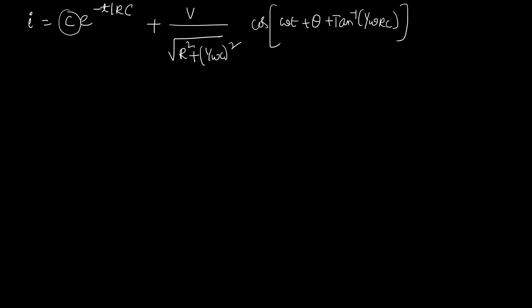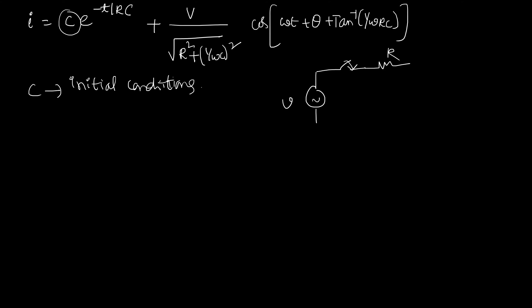C can be obtained using initial conditions. Imagine the circuit: supply voltage, switch closed, and the resistor. We assumed the initial charge of the capacitor is 0, meaning the voltage across it is 0. So at t = 0 the capacitor behaves like a short circuit. The current at t = 0 is I = V/R.